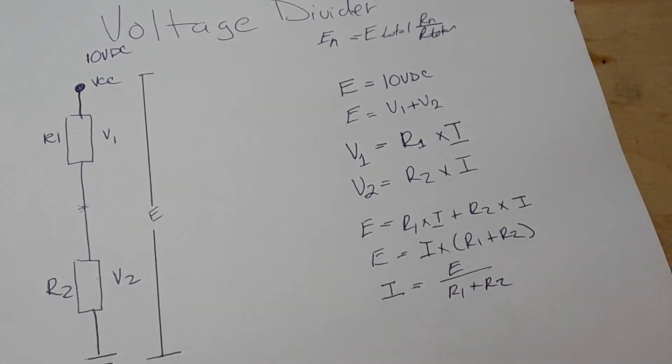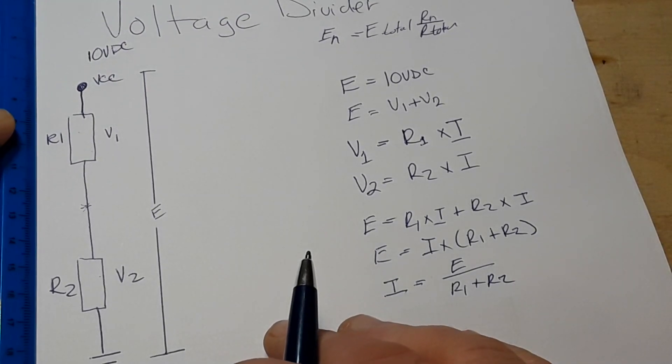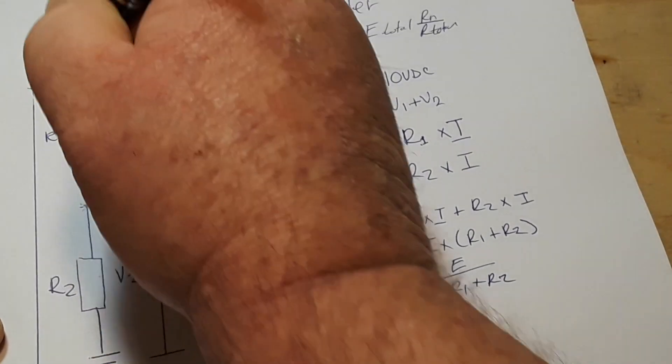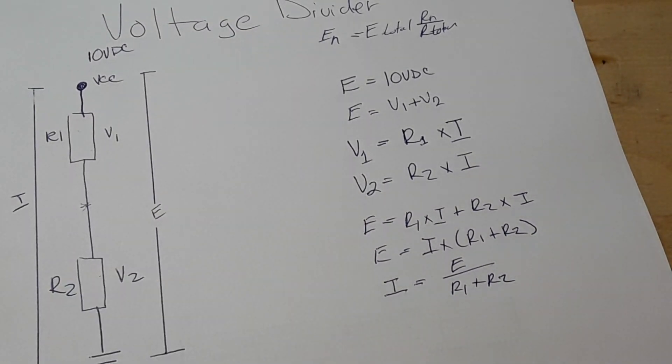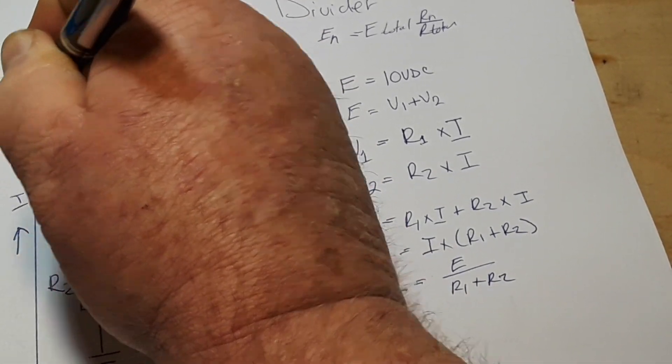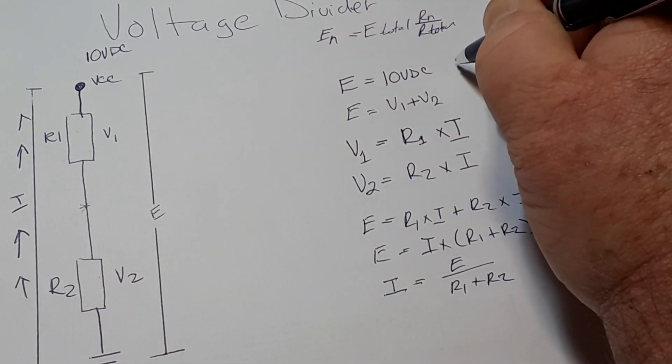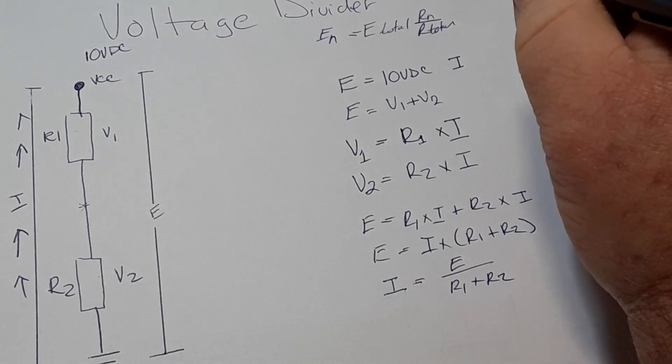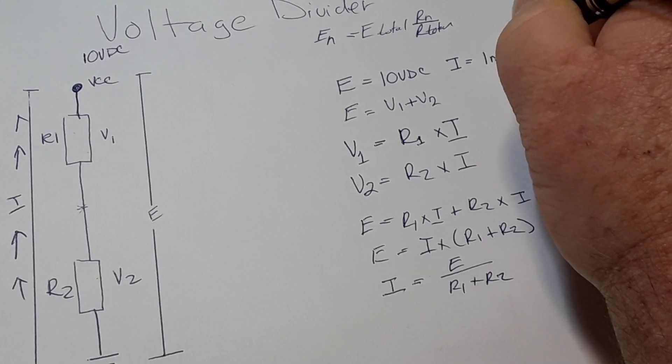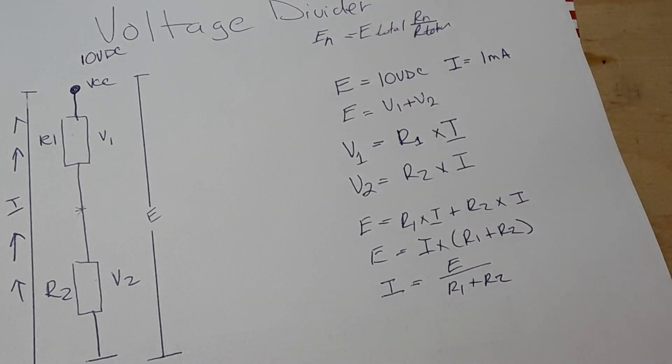So, let's say we're given another piece of information. For instance, let's say we're given I, the current, which would flow in this direction. This will make people very happy. And let's say we've been told our current is 1 milliamp. Well, now we know two out of three things, right?